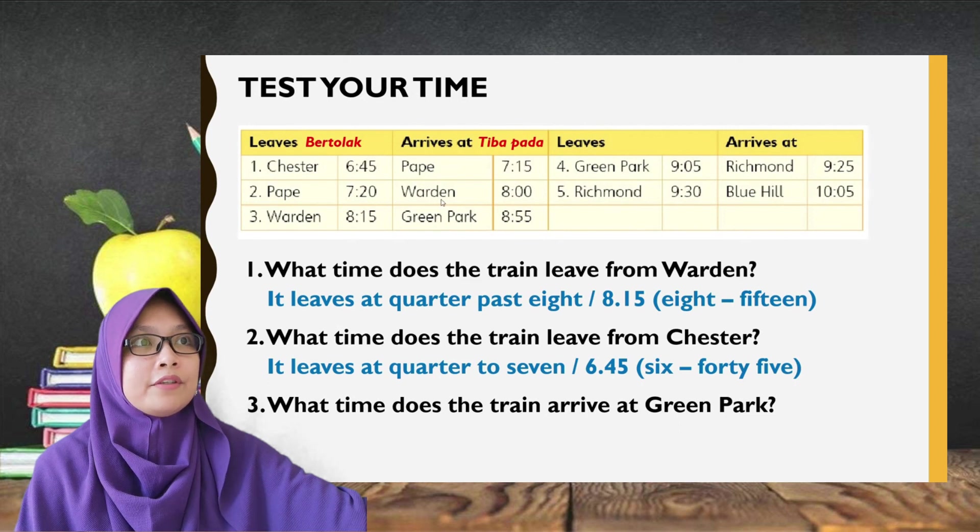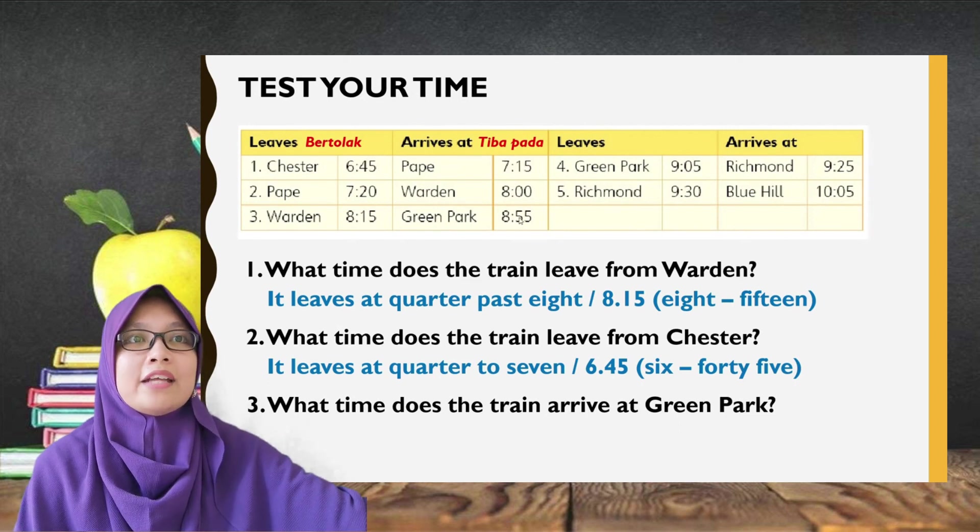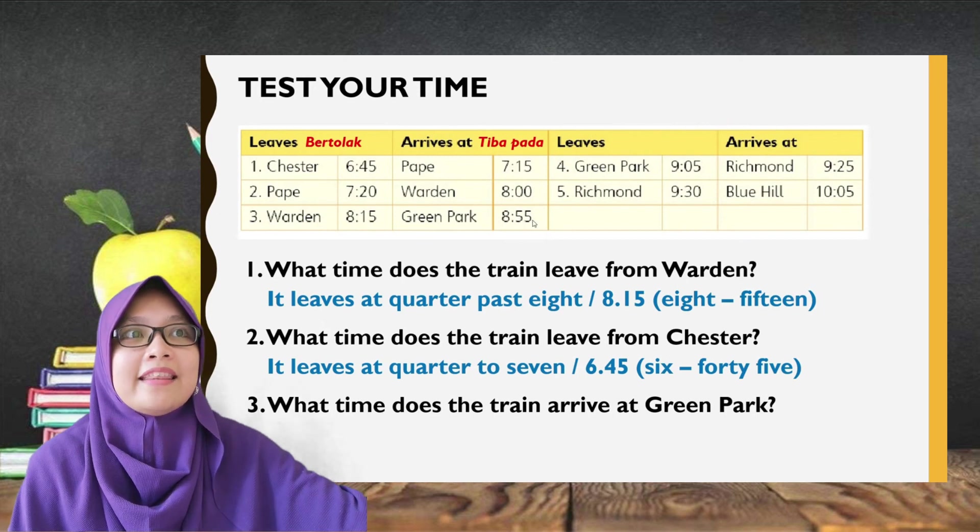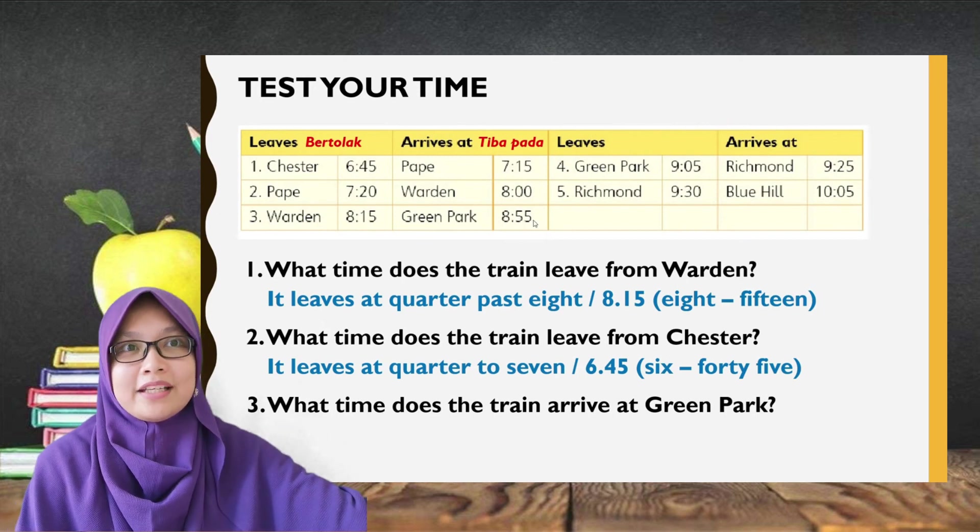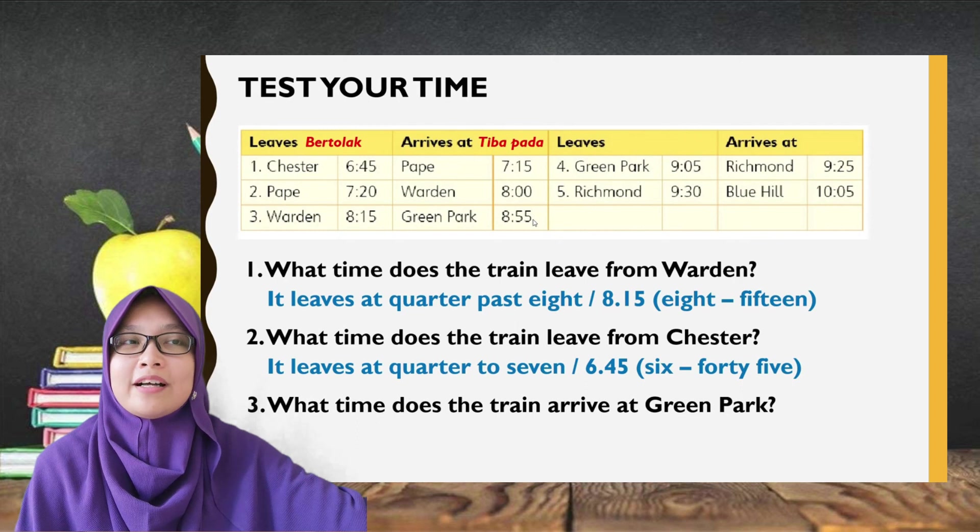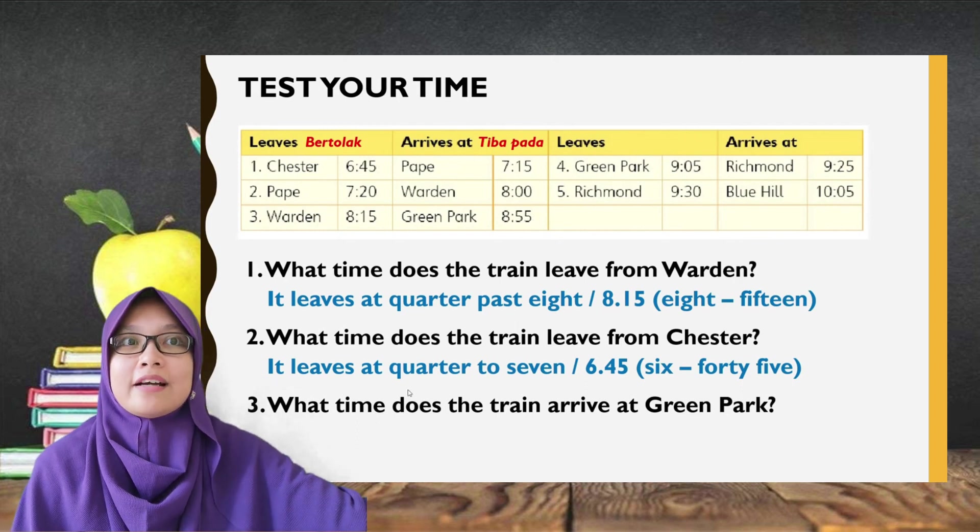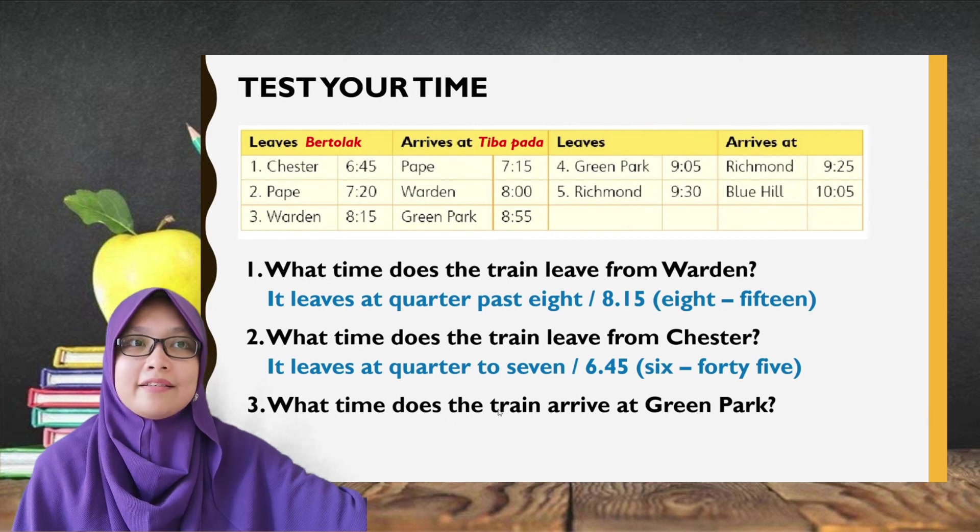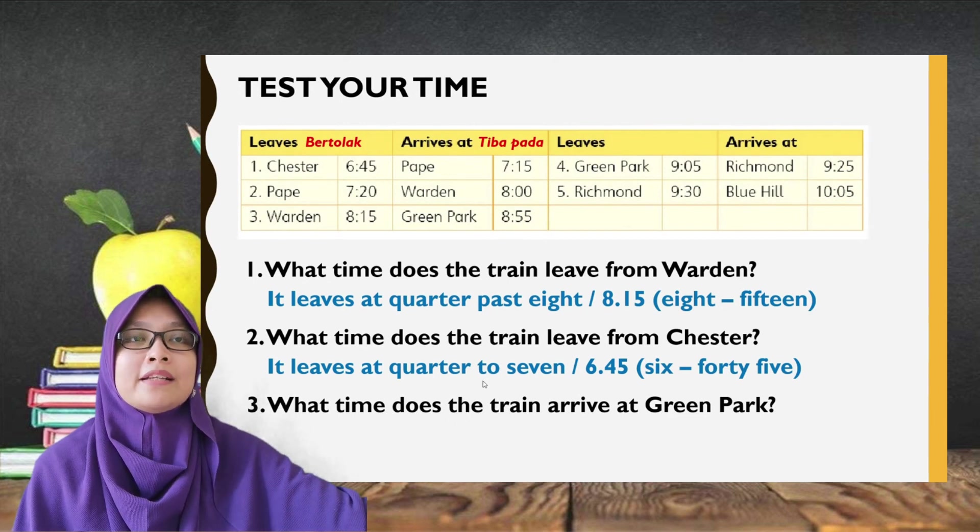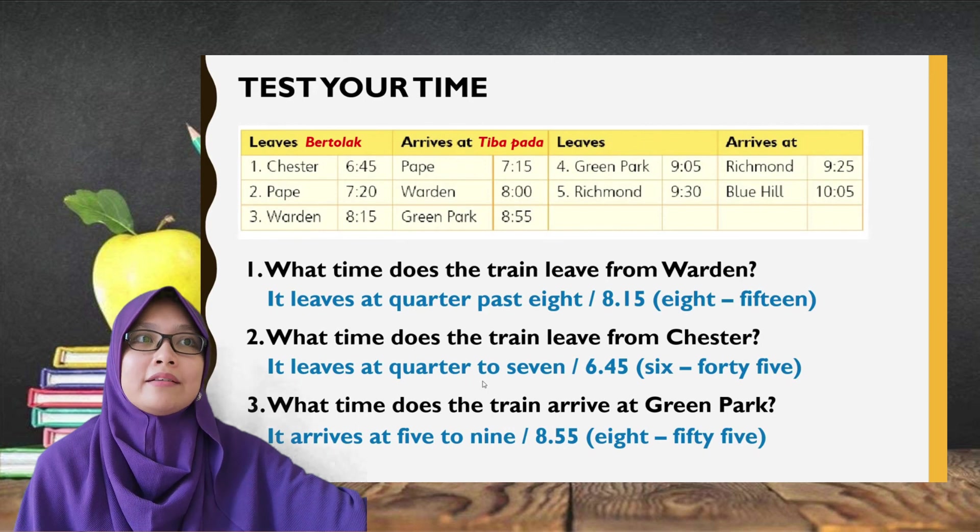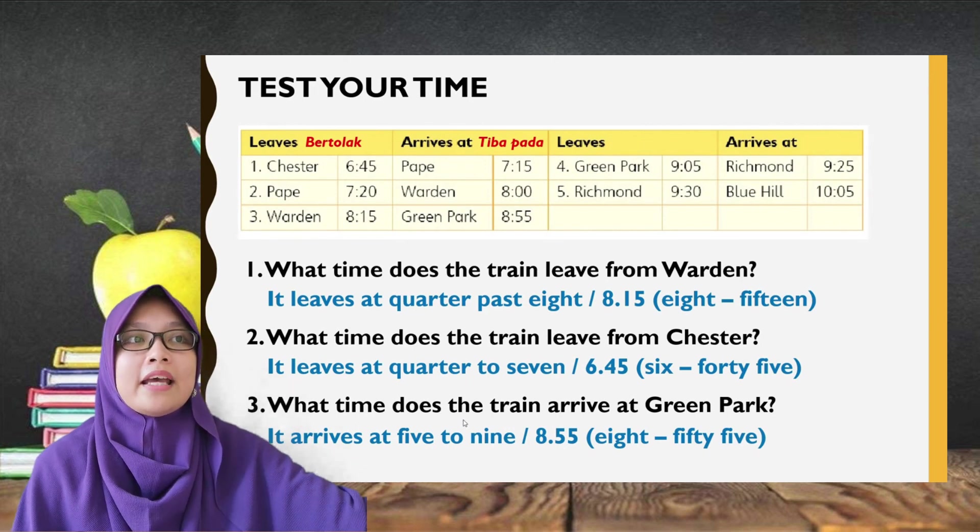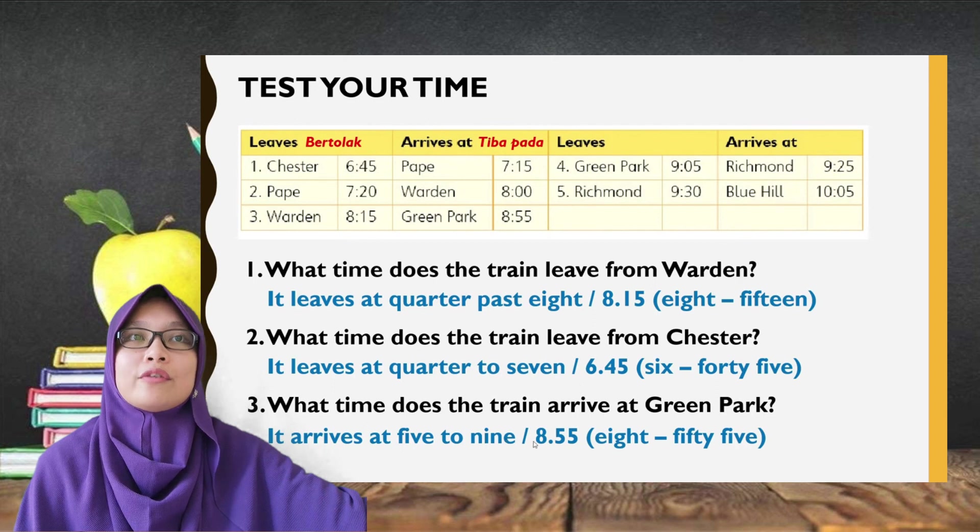And look at the arrival time. It is 8.55, right? Okay, class, we know that 8.55 means there is another 5 minutes before the next hour, which is 9 o'clock. So, we say it arrives at 5 to 9. 5 minutes sebelum pukul 9. 5 to 9 means 8.55 o'clock.